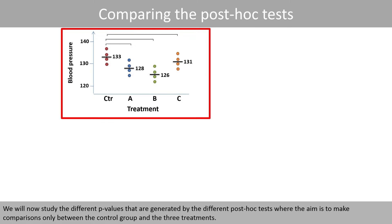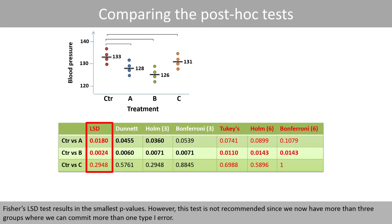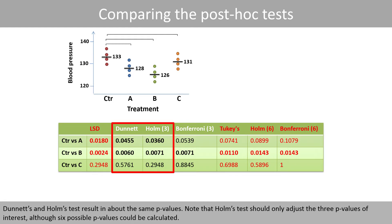We'll now study the p-values generated by the different post-hoc tests where the aim is to make comparisons only between the control group and the three treatments — three comparisons out of the six possible. Fischer's LSD test results in the smallest p-values; however, it is not recommended since we have more than three groups and can commit more than one type I error. Dunnett's and Holm's test result in about the same p-values. Note that Holm's test should only adjust the three p-values of interest, although six possible p-values can be calculated.